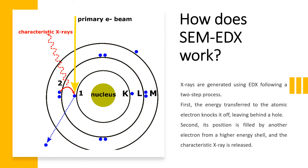The energy of this X-ray is unique to the specific element and transition. X-rays emitted through this process are collected by a silicon drift detector, which measures the signal and interprets it using software. The chemical information can be visualized in several ways, including elemental mapping and line scans. In this way, X-rays can be used to identify each element that exists in a sample.